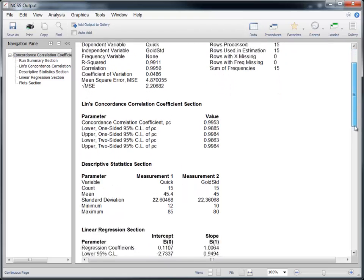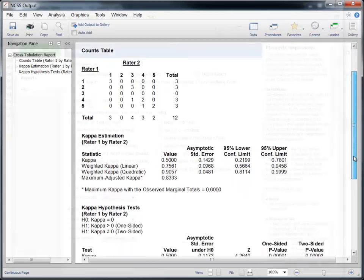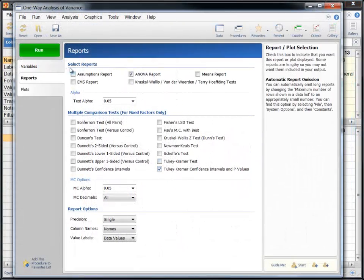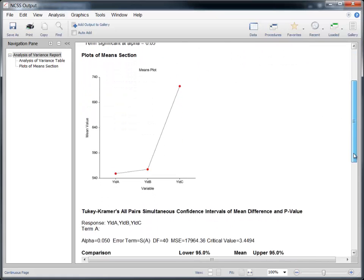Lin's concordance correlation coefficient, the weighted kappa statistic, and p-values for the Tukey-Kramer multiple comparison test are now available in NCSS 9.